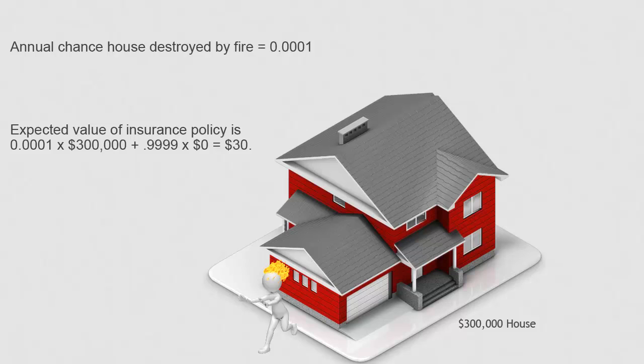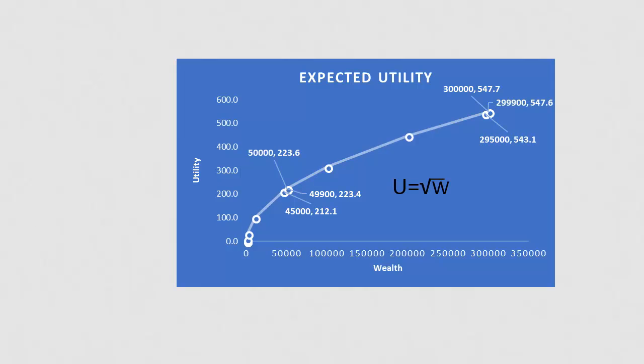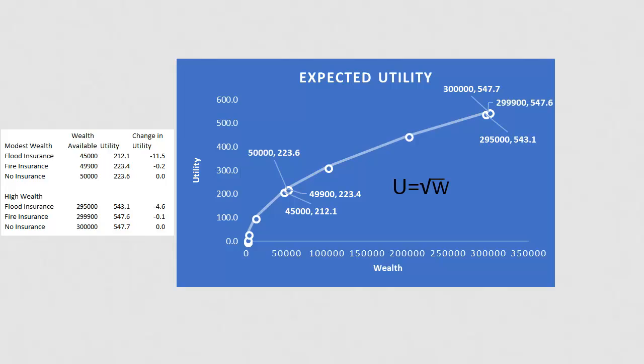Now, an insurance company may be willing to insure against the loss of your $300,000 house for $100 a year. According to expected value, you shouldn't insure your house. The cost of insurance, $100, is far greater than the expected loss of your house being destroyed by fire, which is only $30. The expected utility is different, however. Utility is the square root of income in this example. If you're wealthy, paying $100 only has a small marginal decline in your utility from $547.7 to $547.6. If you were unlucky and lost your house, the loss of everything would have a much greater impact on utility. So you say yes to fire insurance.